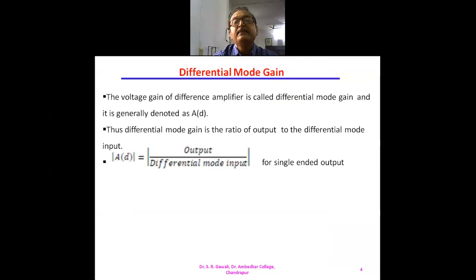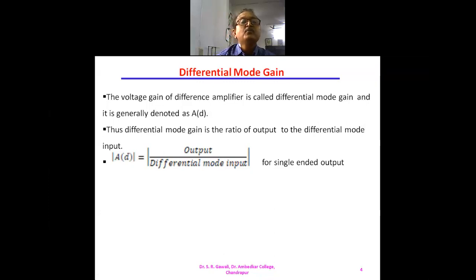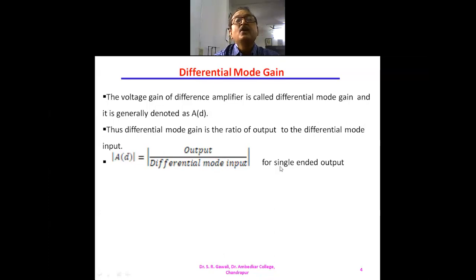The voltage gain of a difference amplifier is called the differential mode gain, and it is generally denoted as A_D. The differential mode gain is the ratio of output to the differential mode input. A is for gain and D is for difference. Differential mode gain of the amplifier is the ratio of output to the differential mode input, and this is for the single-ended output.